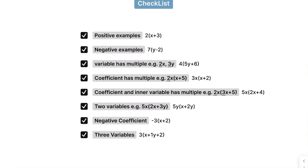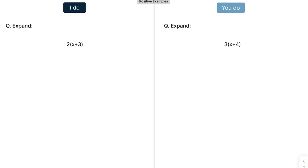We're going to learn how to expand single brackets. We'll start off with simple examples on positive numbers, then look at negative numbers, and cover all the scenarios on single brackets. The way these videos work, I'll do the example on the left, then you press pause and have a go at the example on the right. So let's make a start.